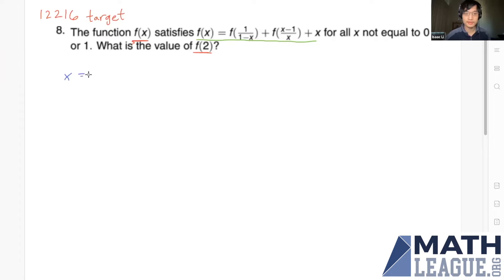If x = 2, we get f(2) = f(1/(1-2)) = f(-1), plus f((2-1)/2) = f(1/2), plus 2. So we have written f(2) in terms of some other unknowns.